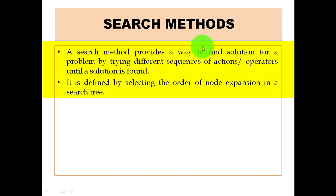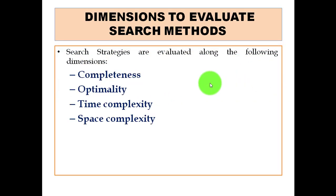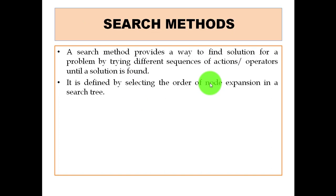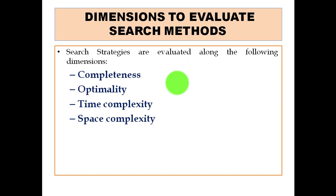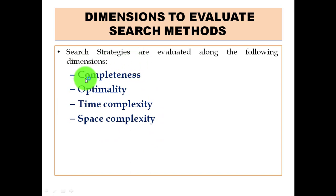These methods are actually defined by selecting the order of node expansions in a search tree. We have different search methods, and we need to evaluate their performance. For that we need some particular dimensions. The dimensions used to evaluate search methods are: completeness, optimality, time complexity, and space complexity.